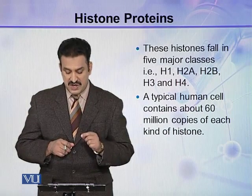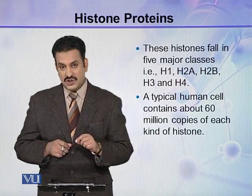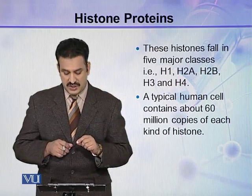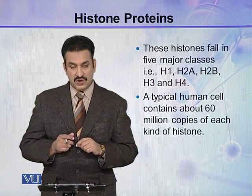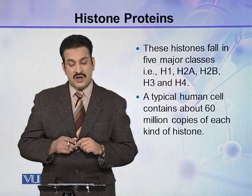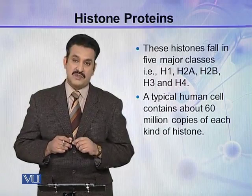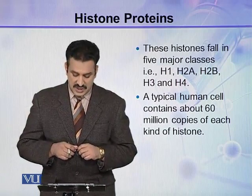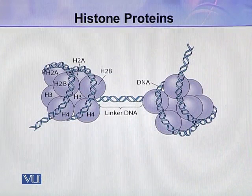So 60 million copies of each histone — H2A, H2B, H3, H4, H1 — all these are present in a typical human cell.